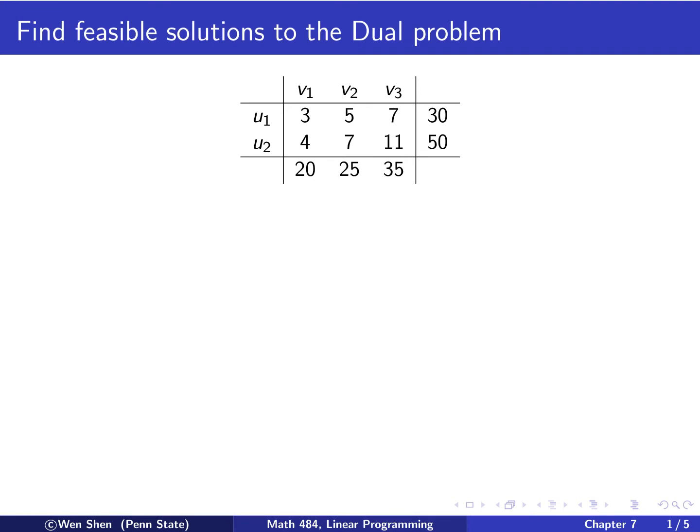For the dual problem, the constraints are ui plus vj shall be less than or equal to the cij. So ui plus vj add up shall be less than the cij.